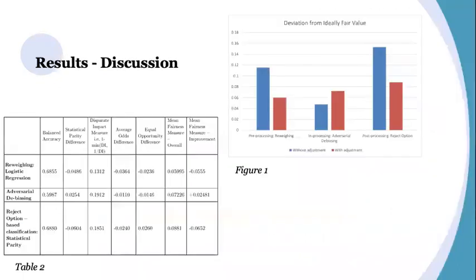Regarding all three techniques, choice of algorithmic processing technique heavily influenced the success of discrimination reduction. The pre- and post-processing techniques proved to be the most successful, as not only did they improve the fairness measures, they also brought each metric well beneath the threshold for permissible deviations in fairness.